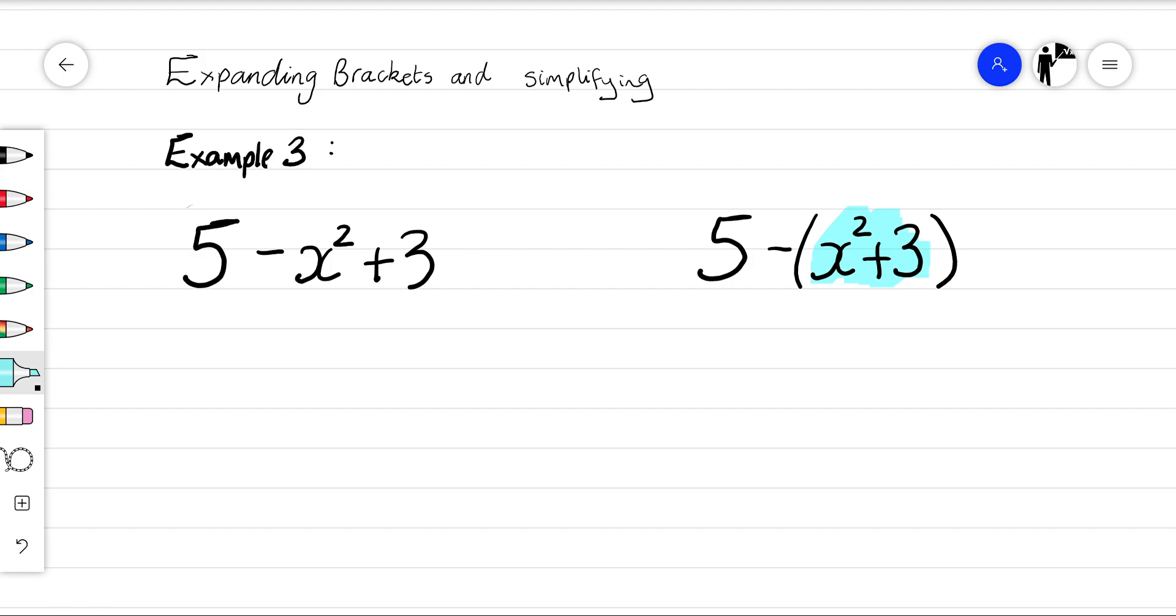Let's just imagine if we give x a value. Let's make x equal to 1, and let's see what happens when I put x equals 1 into both of these. 5 subtract 1 squared plus 3, and over here I'm going to do 5 subtract 1 squared plus 3.